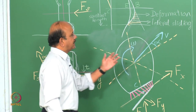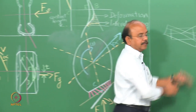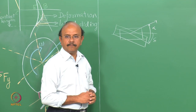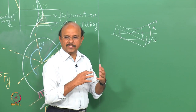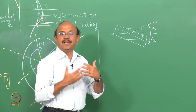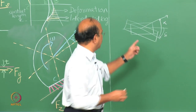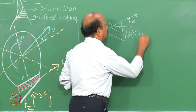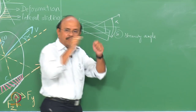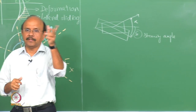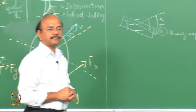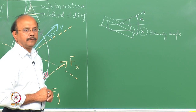Let us say this is the picture of a single wheel. Let us say the vehicle takes a turn - you give a steering angle. When I say steering angle, it is referred to the wheel. Let us say delta is the steering angle. Of course, it is not the angle with which you steer the vehicle; there would be a ratio between the two.